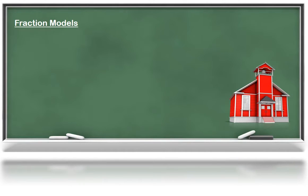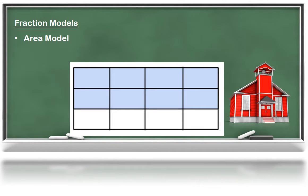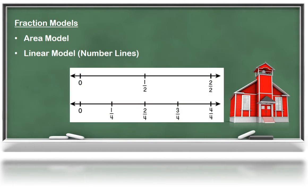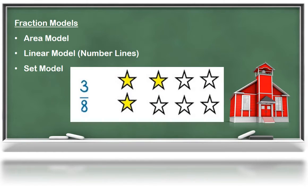Your child will use three different models to represent fractions in third grade. Area models represent fractions by showing a region. Linear models represent fractions as values on a number line. And set models represent fractions as groups of objects. It is important your child learn all three models as they may see fractions represented in any of these ways.